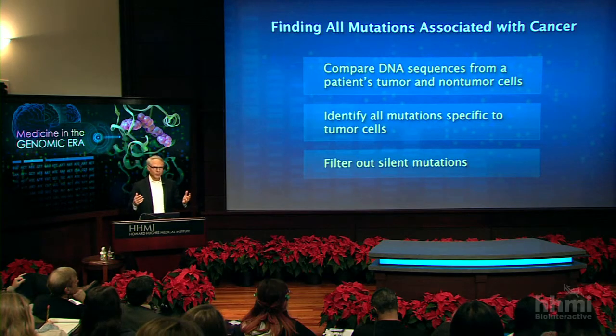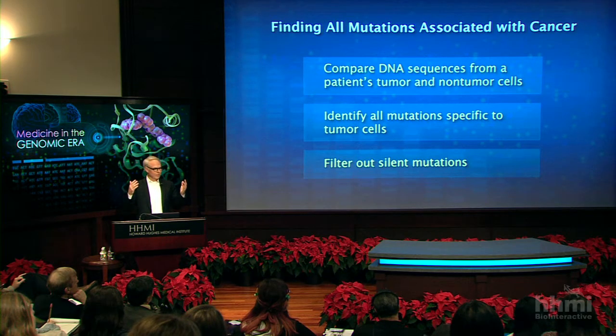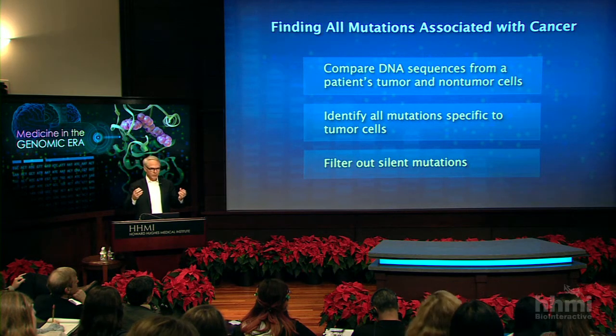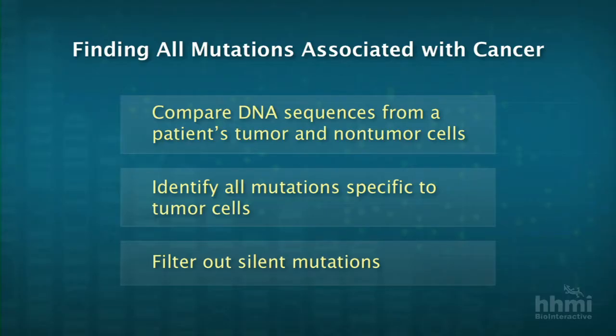The idea is to sequence the DNA from a patient with cancer — sequence the tumor DNA as well as the non-tumor DNA to identify all the mutations that are just found in the tumor DNA and not in the patient's matching normal DNA — and then to filter out the silent mutations and see what's left. So what's the scope of this big project?